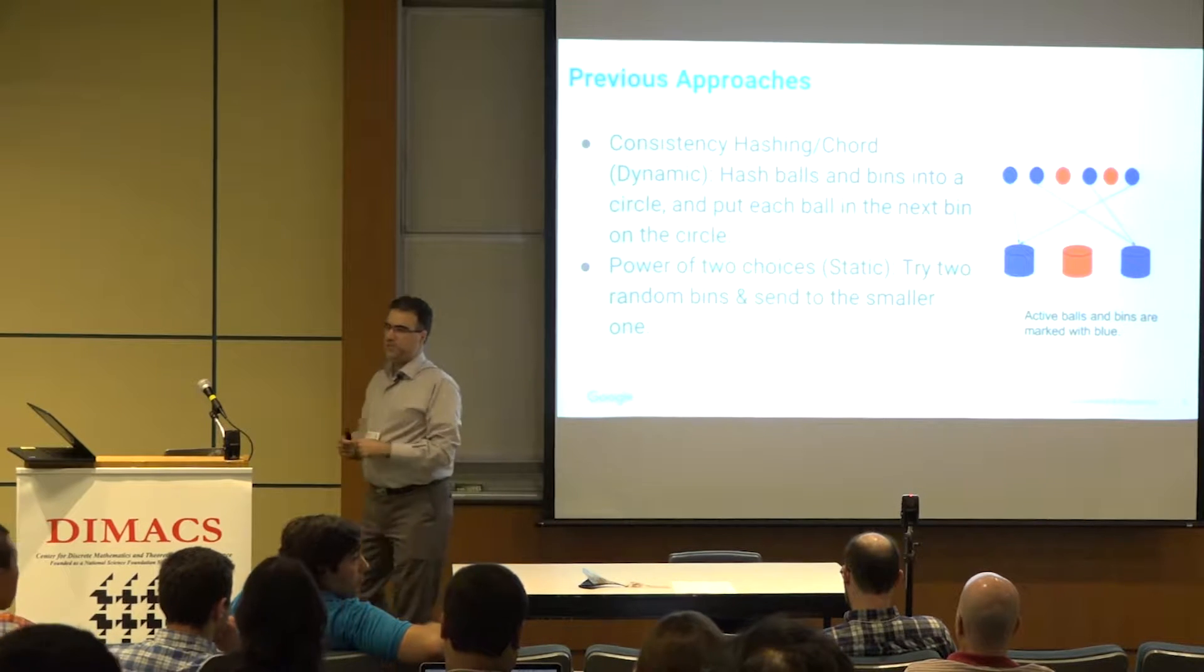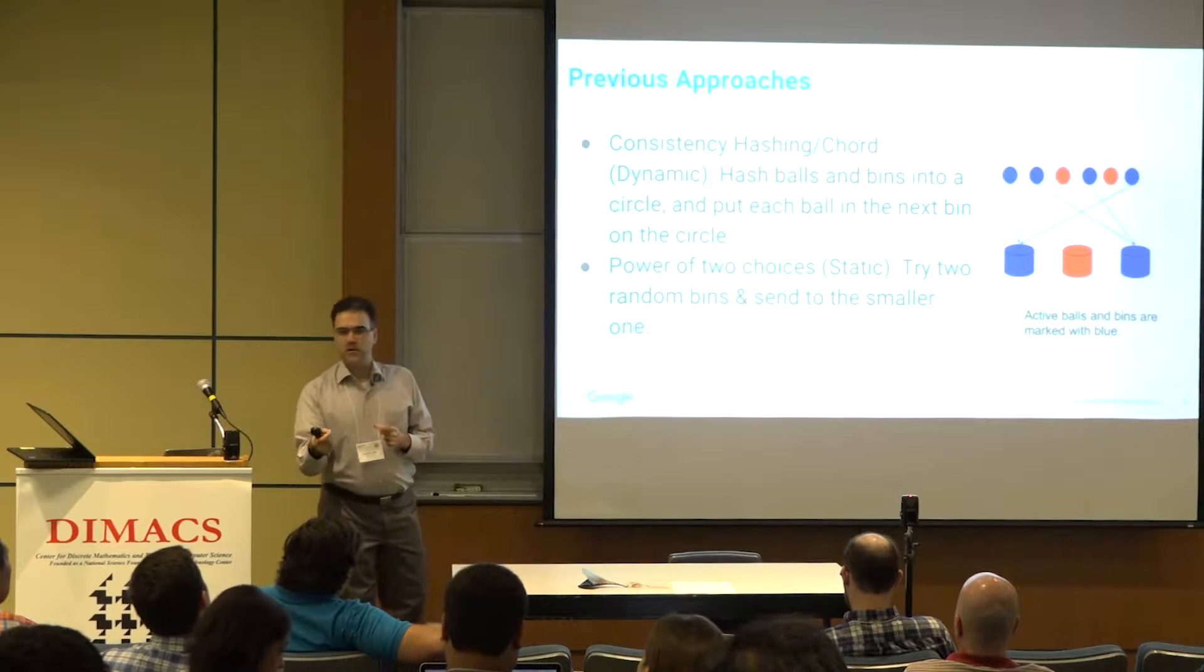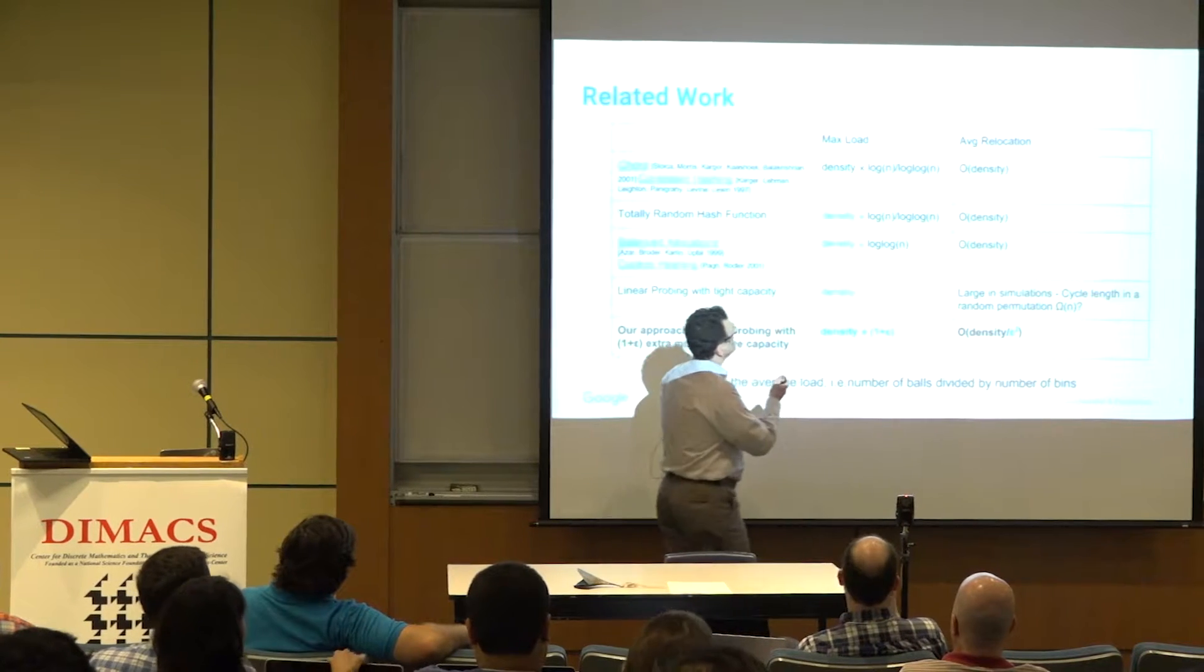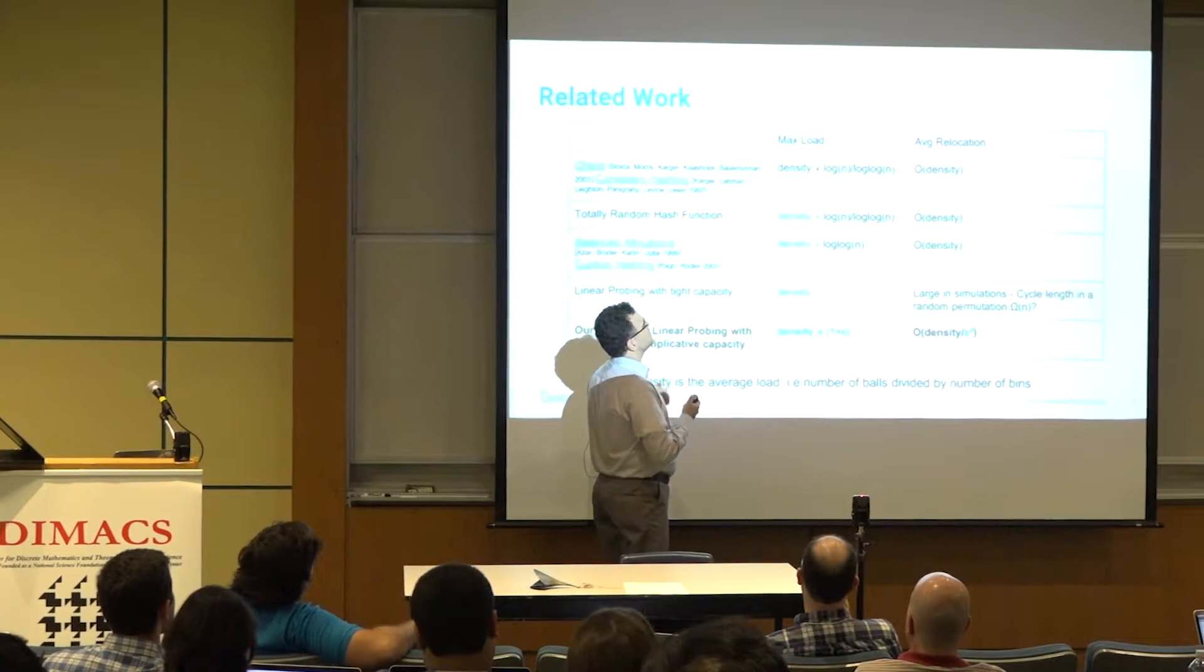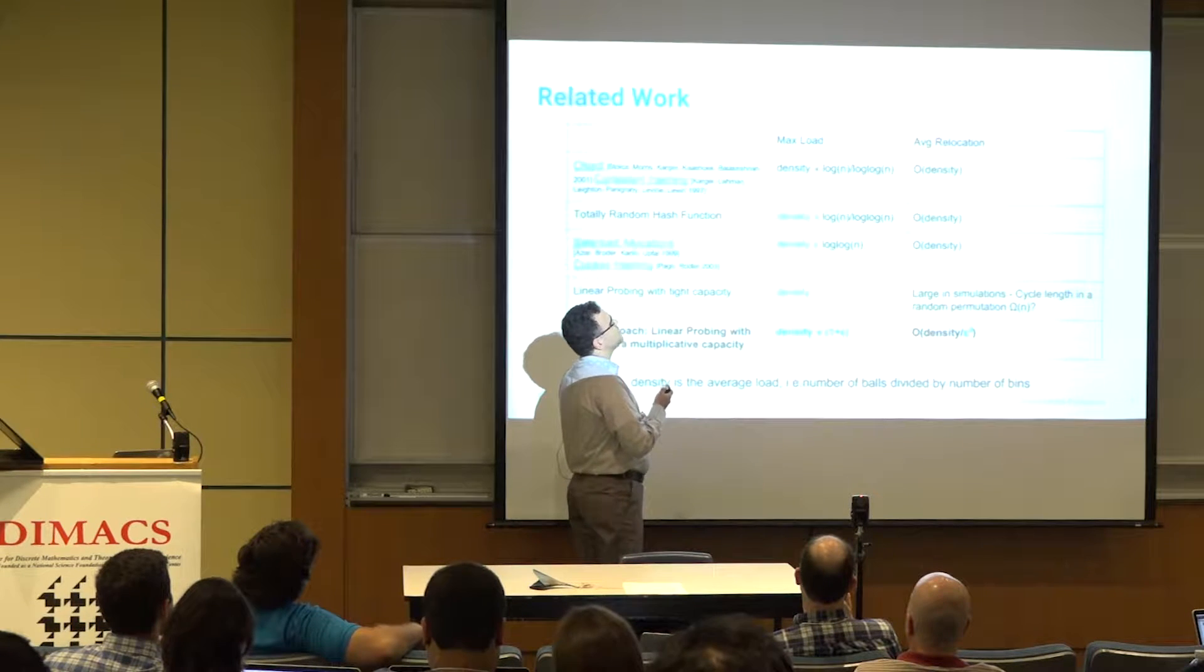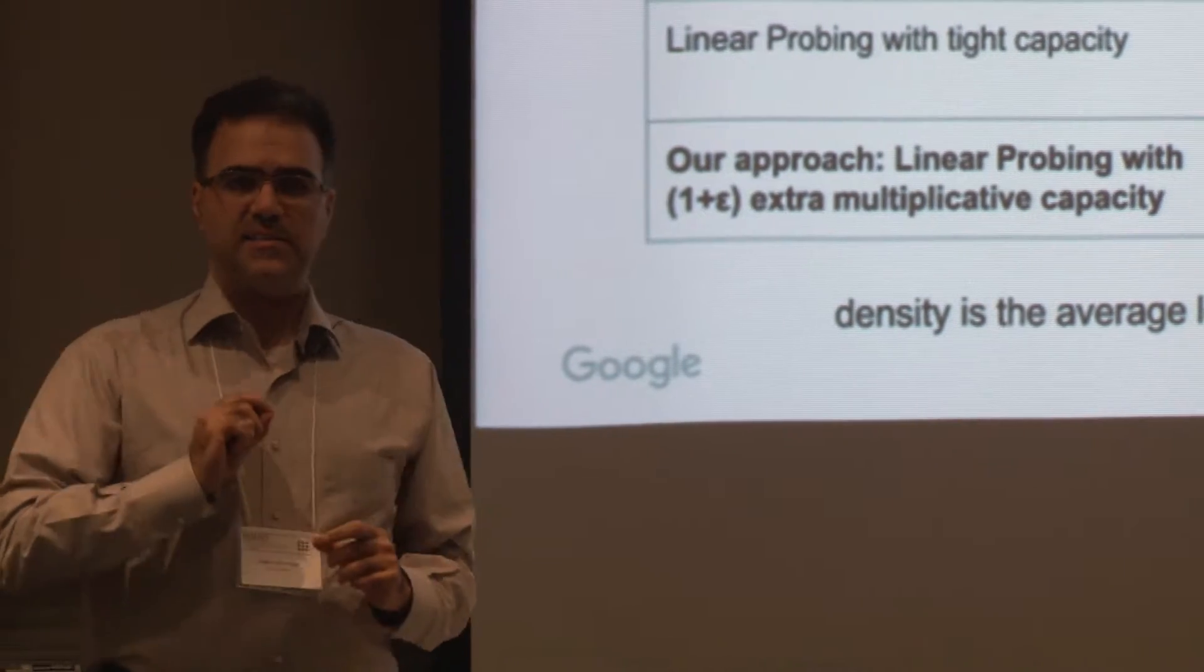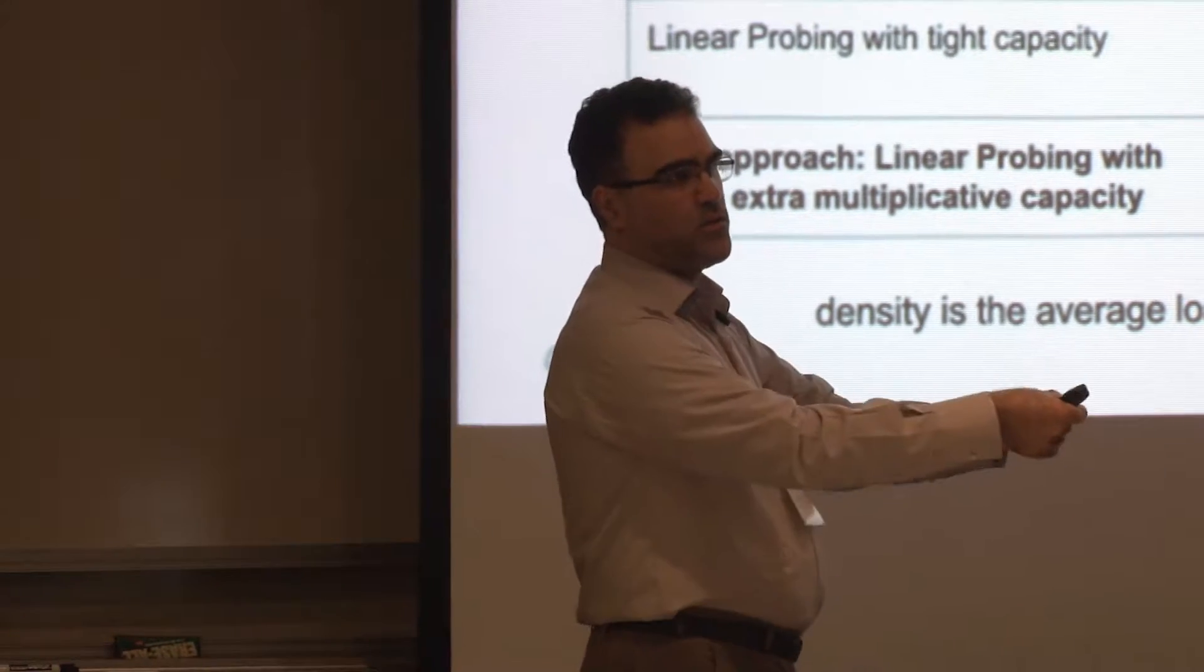If you are in a static environment, you can do something better. You can do power of two choices. You can try to allocate the ball to two random bins and take the minimum loaded bin. If I want to summarize the state of the art for these problems, when you use consistency hashing or Chord-type techniques, the maximum load on a bin could be much higher than the optimum by a log n factor, and that's not acceptable. So congestion is very bad in these environments. But in terms of relocation, Chord or consistency hashing is optimal. You basically only move balls as you really need to, so when a bin fails or is removed, you only reallocate the balls allocated to that bin.